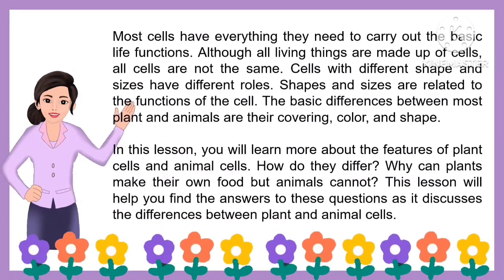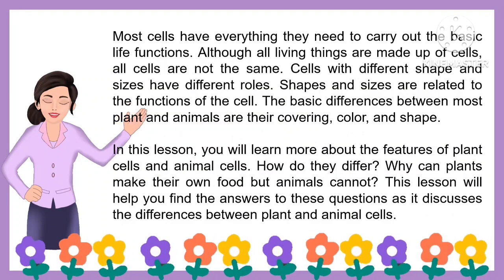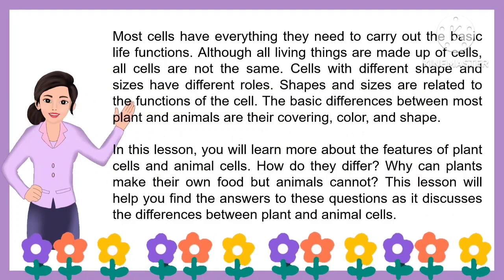Most cells have everything they need to carry out the basic life functions. Although all living things are made up of cells, all cells are not the same. Cells with different shapes and sizes have different roles. Shapes and sizes are related to the functions of the cell. The basic differences between most plant and animal cells are their covering, color, and their shape. In this lesson, you will learn more about the features of plant cells and animal cells.